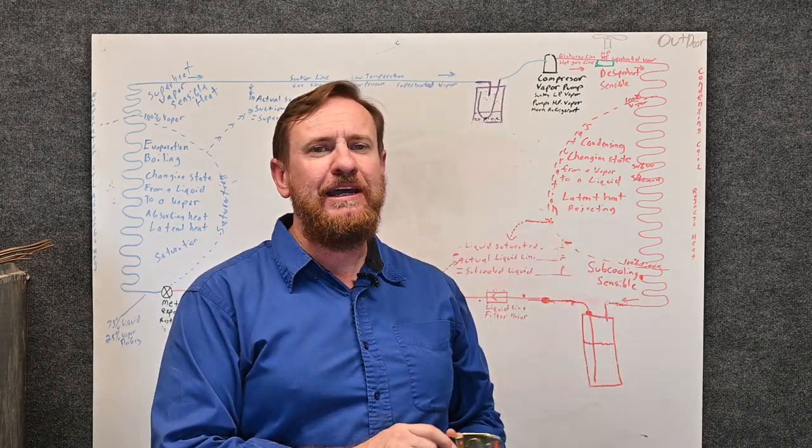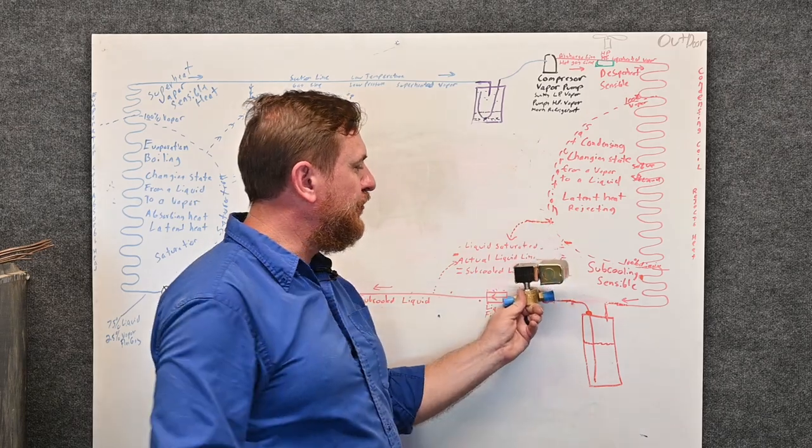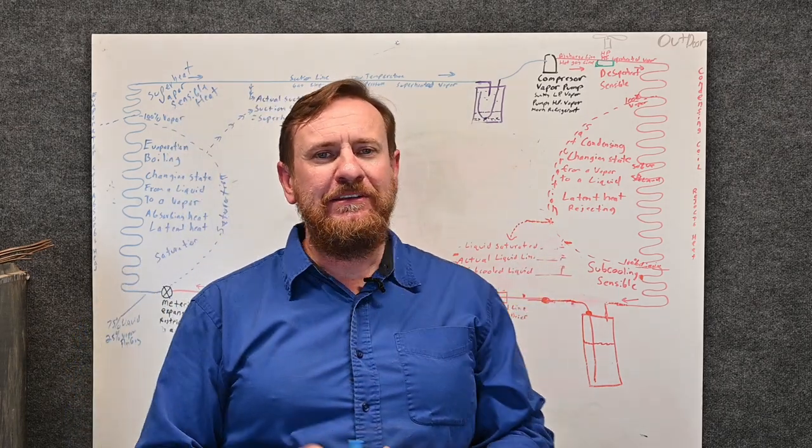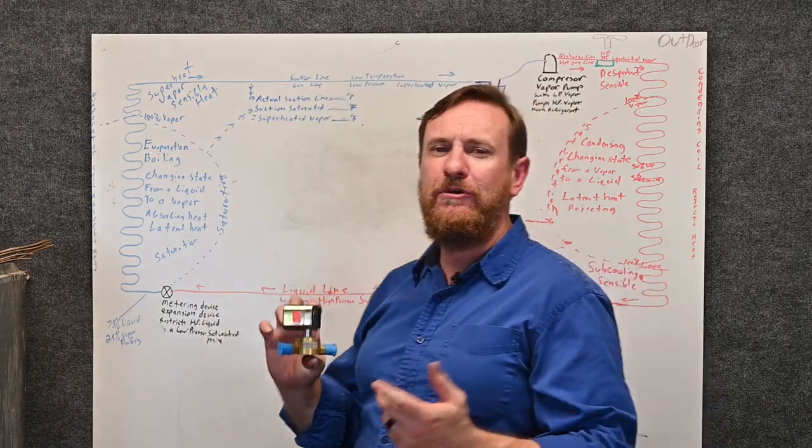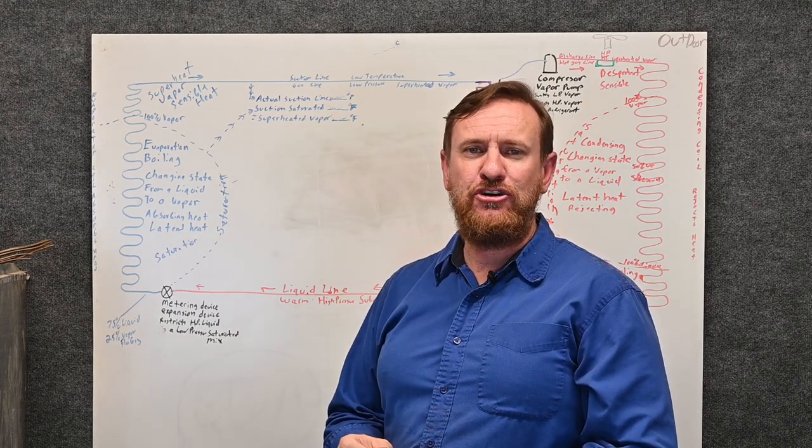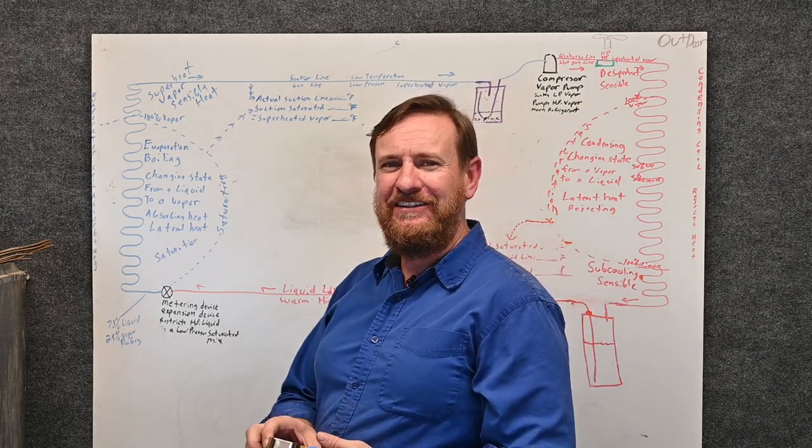For residential, sometimes you'll see them and they'll install it where it's wired to the outdoor unit to where it closes on the outside. There's many different ways of wiring it, but typically when you see them in commercial, they have two purposes. One, to prevent refrigerant migration and number two, they actually use it as a control. We'll get into more of that later in detail.